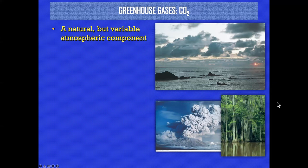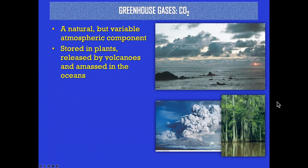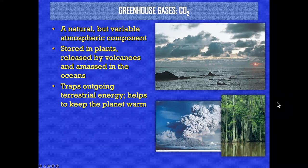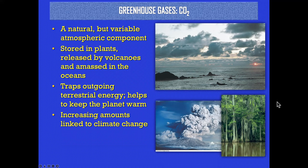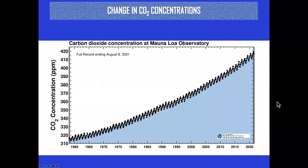Greenhouse gas CO₂ is natural but highly variable — stored in plants, released by volcanoes, and also stored in the oceans. It traps the energy that the Earth is trying to give off, which helps keep the planet warm — that's the basic idea of why it's called a greenhouse gas. Increasing amounts are released by the burning of fossil fuels mostly. Here's what's happened to CO₂ since it began to be measured in 1958 — the up-and-down pattern continues but the overall trend is definitely up.